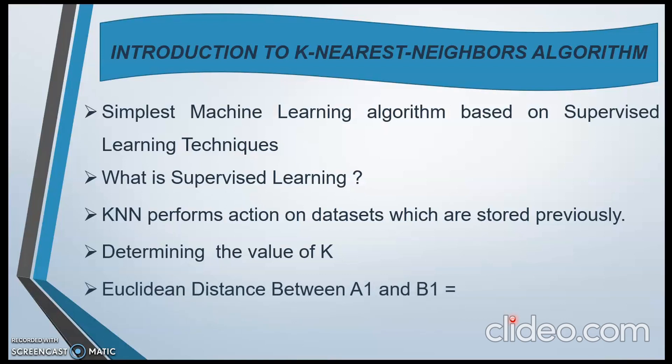In KNN algorithm, we need to calculate the distance between the points by using one formula. That is Euclidean distance formula. For example, suppose we want to calculate the Euclidean distance between point A1 and B1. The formula will be under root of the sum of squared differences.